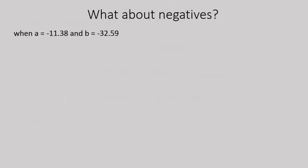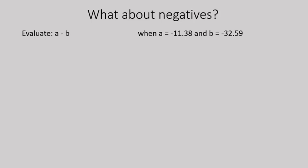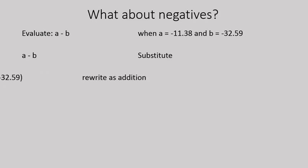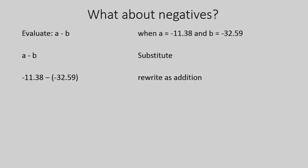For the final question, we're going to substitute negative numbers into a subtraction question. This one has the most negatives you can have, so it's the toughest type of question. You can pause and try it out on your own. The first step is to substitute in: I'm going to substitute negative 11.38 in for a and negative 32.59 in for b. The expression is going to look like this: negative 11.38 minus negative 32.59.